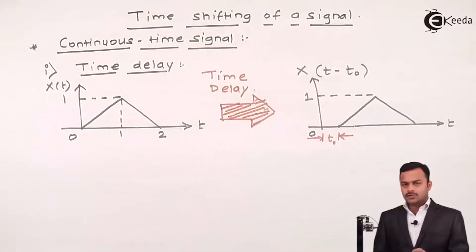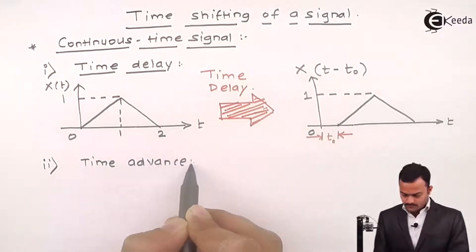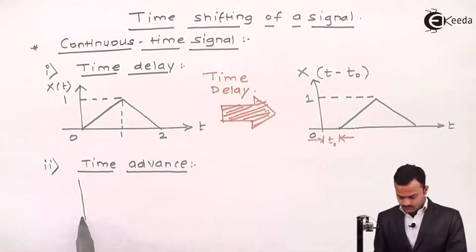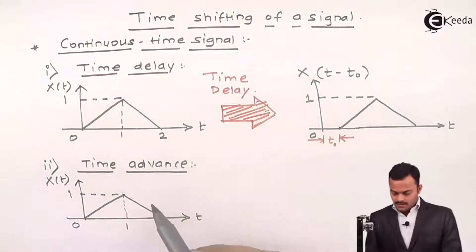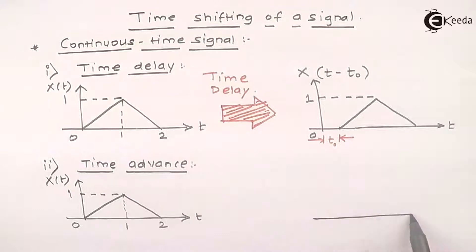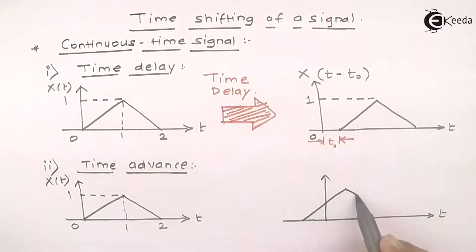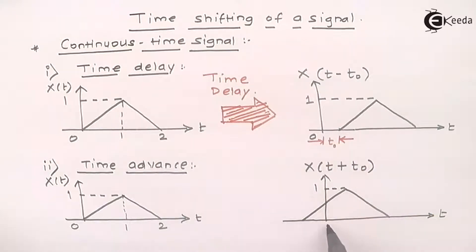Let's go to the second time-shifting operation, that is time advance. Once again we'll explain the property with the help of the same example. The original signal is x of t, and now the operation of time shifting is performed such that we get a signal shifted which we call x of t plus t₀.